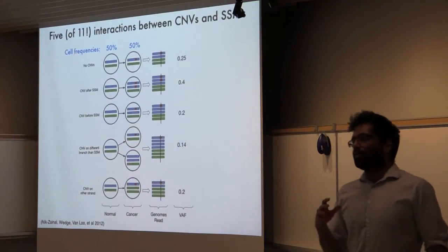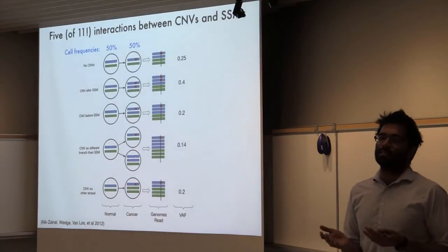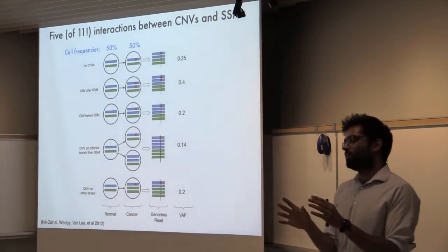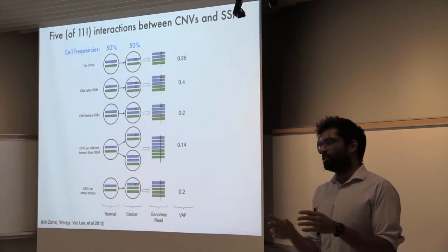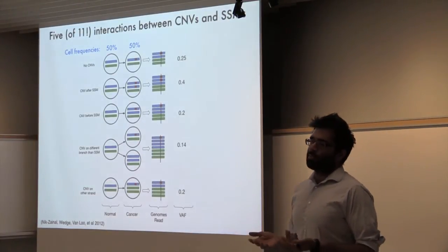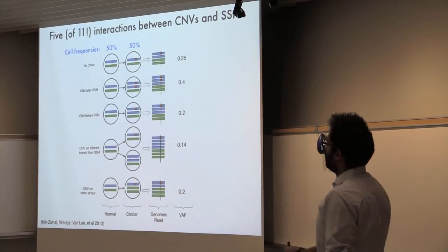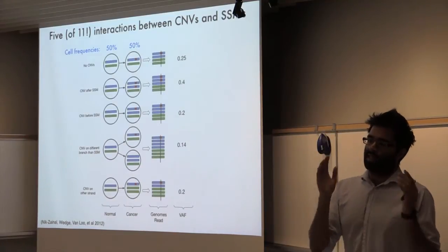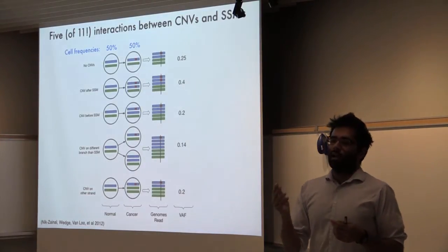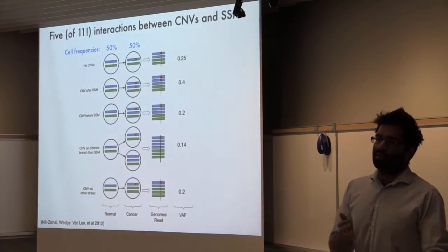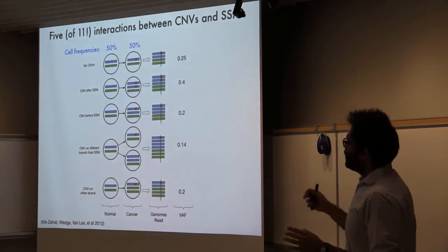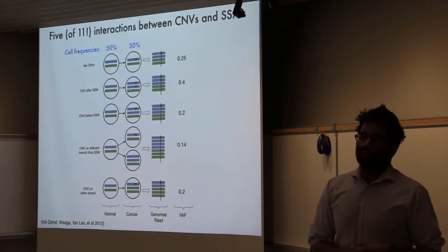Here I'm showing just five out of the eleven possible ways that CNVs and SSMs can interact. The key thing is that the relationship between variant allele frequency and the proportion of cells containing that mutation depends not only on the specifics of the copy number alteration — which strand, how many copies — but also on the evolutionary relationship between the SSM and the copy number change. For example, rows two and three show the same cellular composition, same SSM, same copy number amplification, but in one case the CNV occurred after the SSM so the variant was amplified, while in the other case the SSM occurred after, so there's only one copy. Even though everything else is the same, this evolutionary relationship changes the expected variant allele frequency from 40% to 20%.